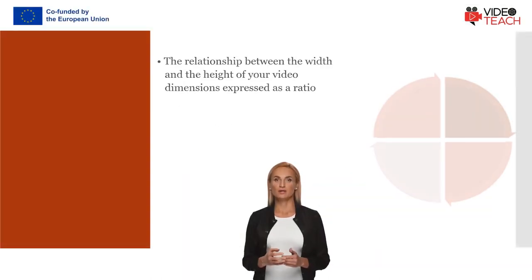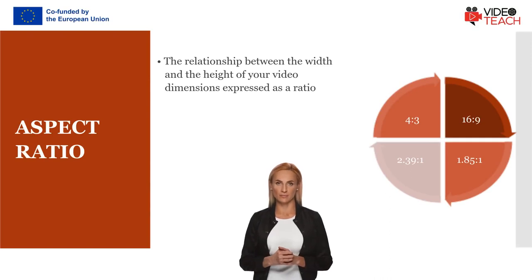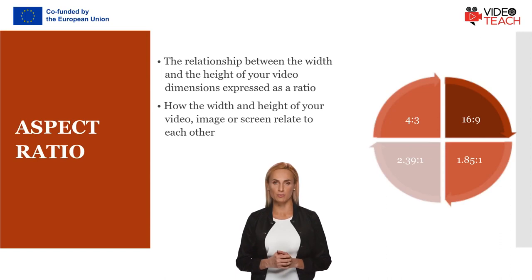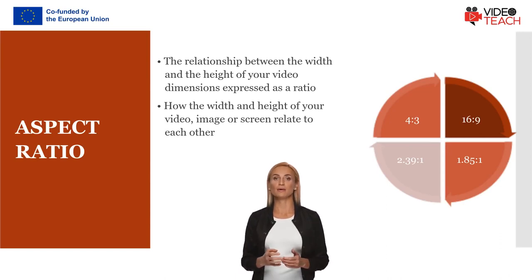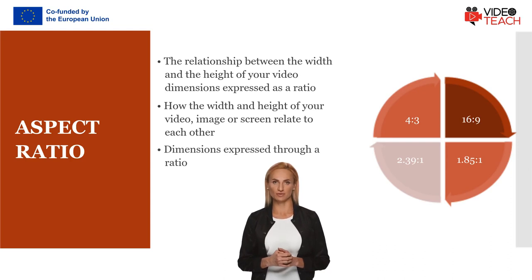Aspect ratio is the relationship between the width and the height of your video dimensions, expressed as a ratio. In other words, it is how the width and height of your video, image, or screen relate to each other. The most common aspect ratios for video are 4:3, 16:9, 2.39:1, and 1.85:1.